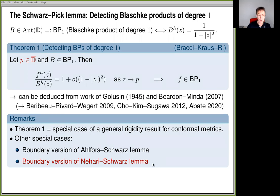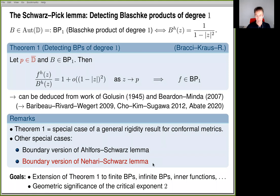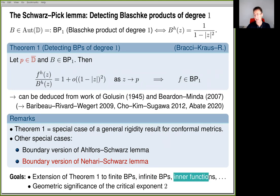There are other special cases of this general result: one is a boundary version of the Ahlfors-Schwarz lemma. But the focus of the lecture today will be a boundary version of the classical Nehari-Schwarz lemma. We have two goals in mind: extend theorem one from Blaschke products of degree one to finite Blaschke products and then at least to certain classes of infinite Blaschke products, and also give a geometric explanation of the critical exponents in these error terms.